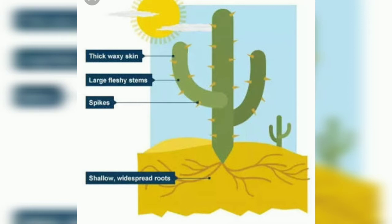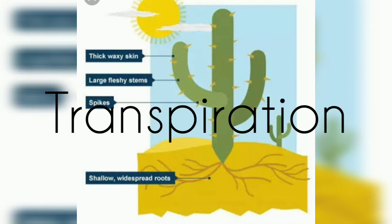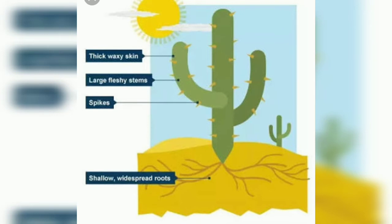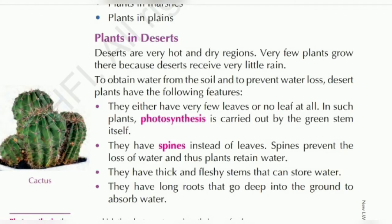In order to prevent the loss of water, these cactus plants or these desert plants have spines instead of leaves. Agar leaves zyada hain toh usko water loss hojayega — that is a term known as transpiration. Transpiration matlab jo patte se water evaporate hojata hai, atmosphere mein jaata hai. So desert plants mein leaves bahut kam hote hain, isliye yeh transpiration zyada nahin hoti. Desert plants have spines instead of leaves — it prevents the loss of water.